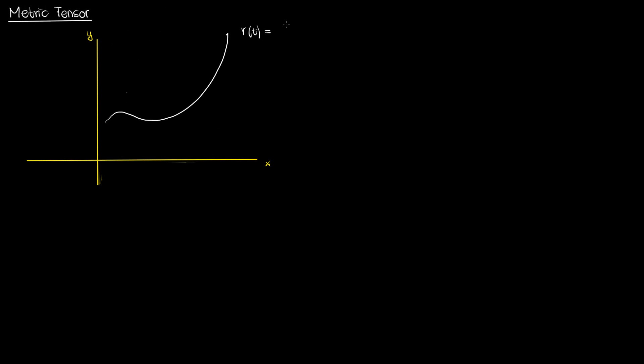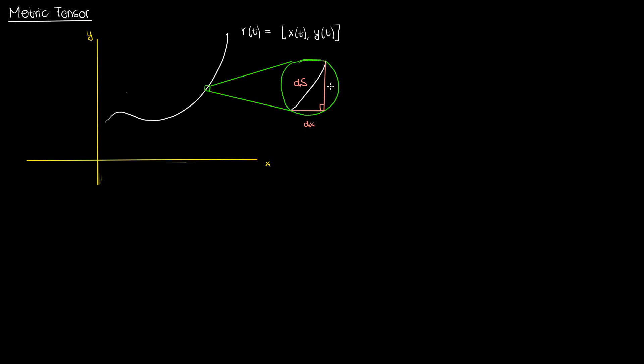Let's say that I had a curve gamma of t on the xy plane, described using the parametric equations for the coordinate x as x of t and for the coordinate y as y of t, where the parameter is t. Suppose I wanted to use these parametric equations to determine the length of this curve. I can zoom in on this curve and isolate an infinitesimally small line segment, writing its length as ds — the hypotenuse of a triangle with sides dx and dy — and using the Pythagorean theorem: ds equals the square root of dy squared plus dx squared.